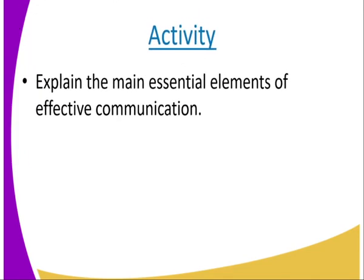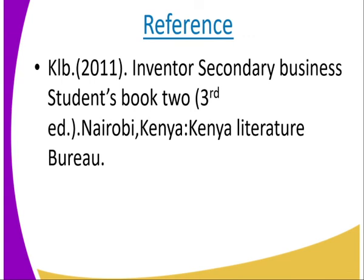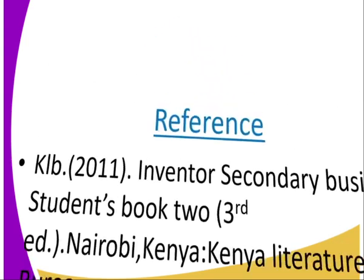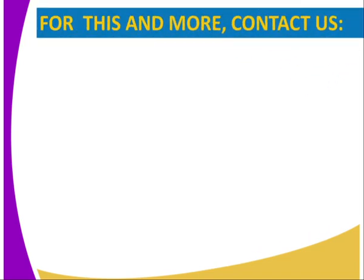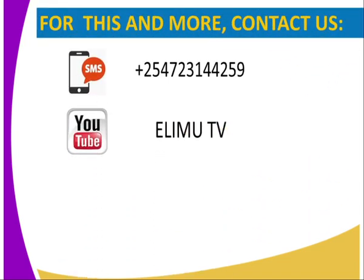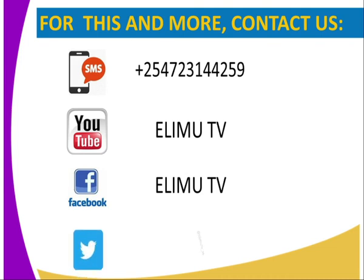Activity: Explain the main essential elements of effective communication. For reference, you can use the KRB 2011 Inventa Secondary Business Student Book 2. In case you have any questions, you can reach us through SMS, YouTube, Facebook, or Twitter. Stay tuned to Ring TV. Thank you.